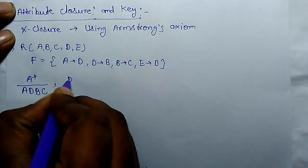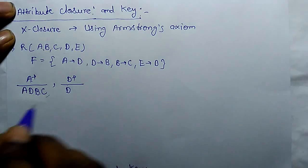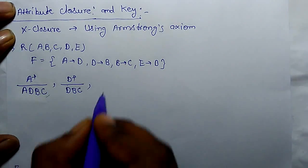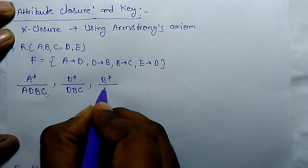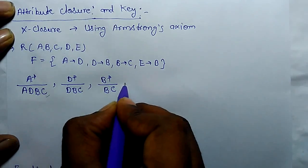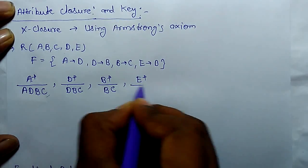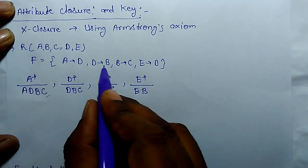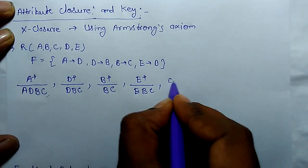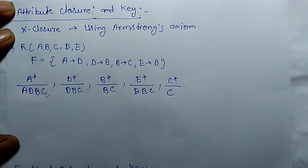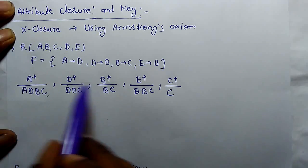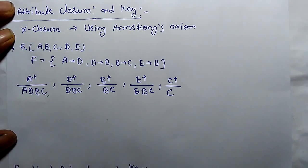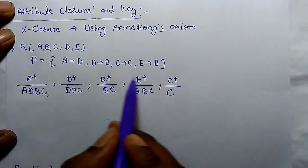D closure: D determines D itself using reflexivity, D determines B, and B determines C. For B closure: B determines B and C. For E closure: E determines E, E determines B, and B determines C. For C closure: C determines C itself. So no single attribute closure is able to determine all the attributes of the relation, meaning these closures cannot be a key.